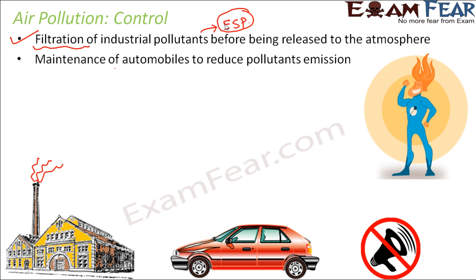The next thing that we should do is maintenance of automobiles to reduce pollutant emissions. The emissions from automobiles also contain a lot of harmful gases. One important cause is the use of petrol or diesel as fuel, because incomplete combustion of petrol and diesel leads to the release of carbon monoxide, which is very harmful. There are quite a few things that can be done to maintain our automobiles better so that they do not release such harmful substances.